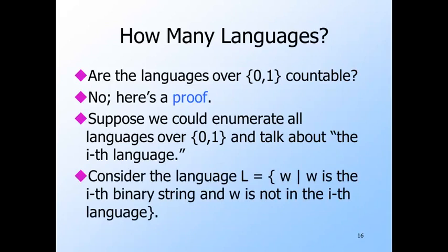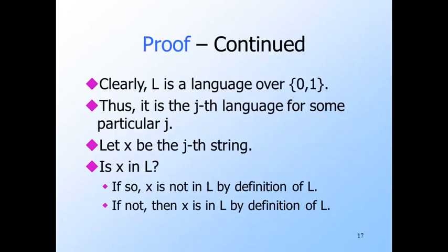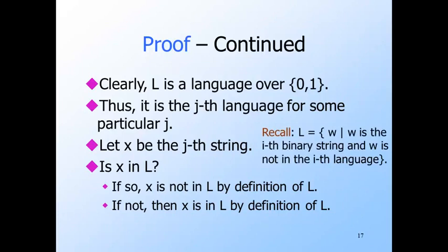We already know how to enumerate binary strings, so we can talk about the i-th binary string. Now I'm going to define a language L. L is the language containing those binary strings w such that w is the i-th binary string for some i, and w is not in the i-th language. L is surely a language over alphabet {0,1}. Since we're assuming that the languages over {0,1} are enumerable, that means that for some j, L is the j-th language. So let x be the j-th string. Now we can ask: is x in L? It turns out that if it is, then it isn't, and vice versa.